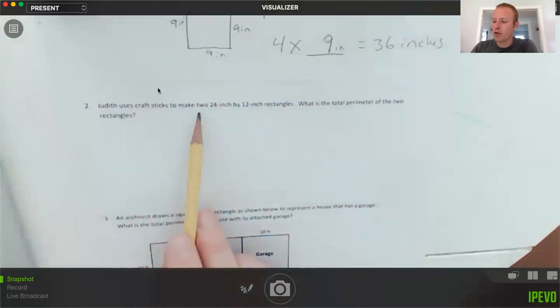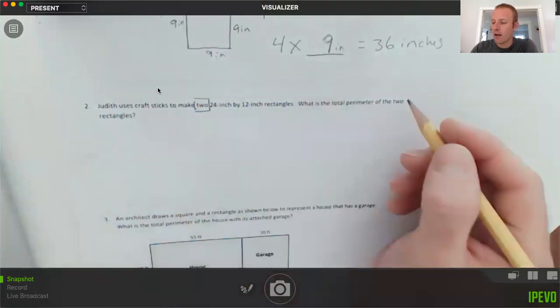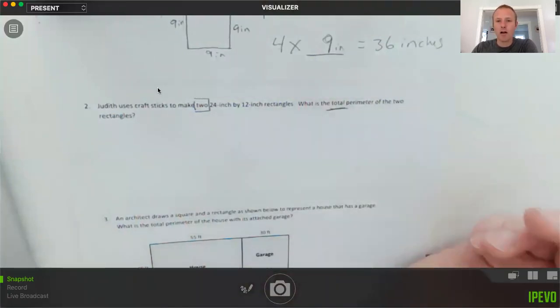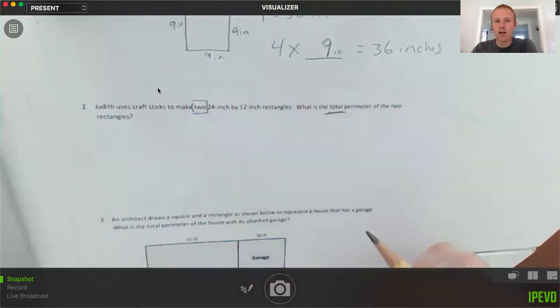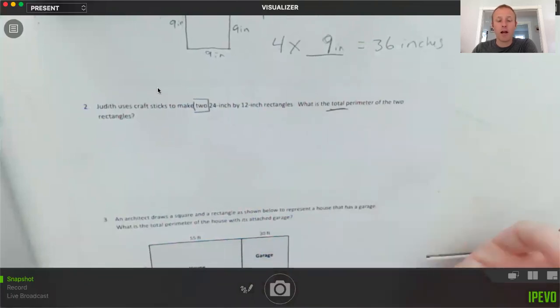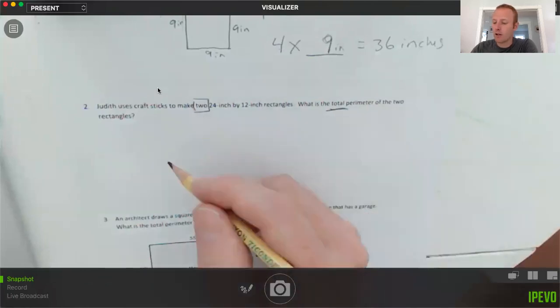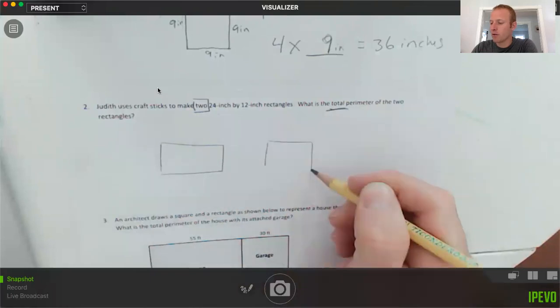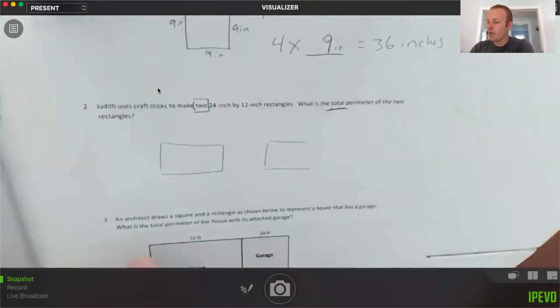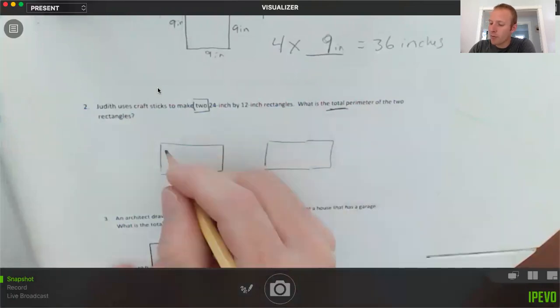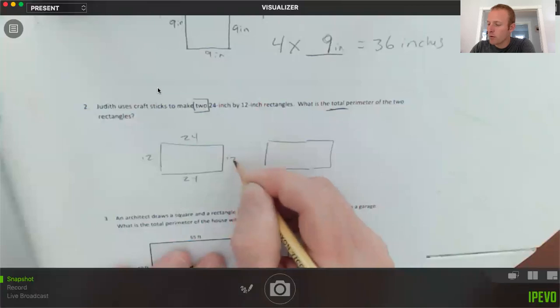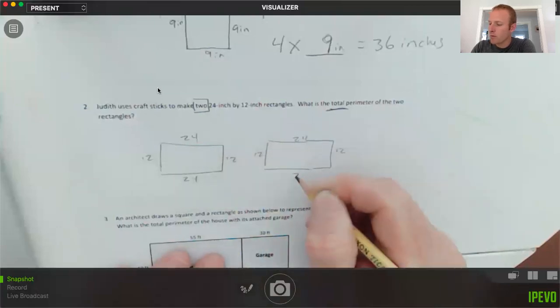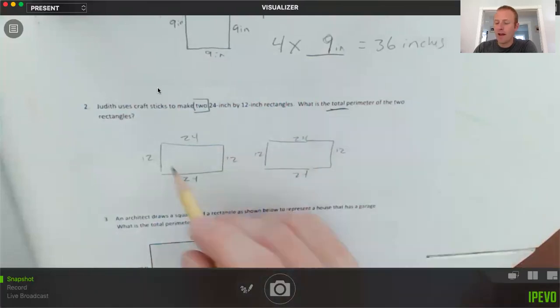Judith uses craft sticks to make two—look at that, that word is going to be important, I already know—two 24 inch by 12 inch rectangles. What is the total perimeter of the two rectangles total? This is a problem where if you don't read it carefully, you're going to look at just the numbers here, 24 and 12, and you're going to find the perimeter of that rectangle and you're only going to get halfway because you're going to make the perimeter of one of the two rectangles.